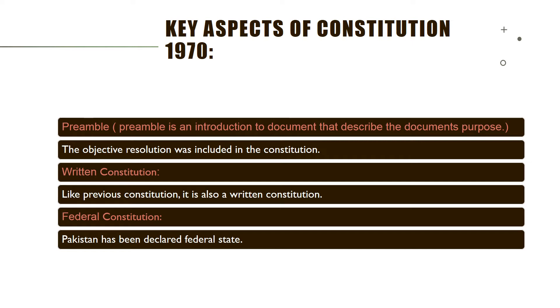Written Constitution: Like the previous constitutions, it is also a written constitution, which comprises 280 articles, 12 sections, and 6 judicial records.